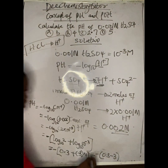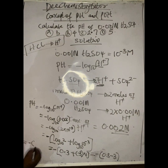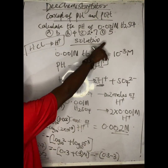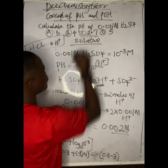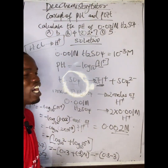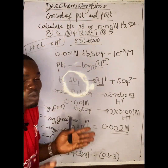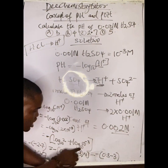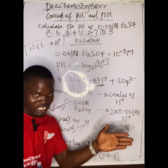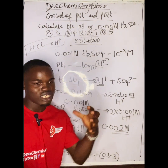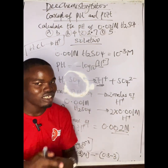So the pH of 0.001 mol/L H₂SO₄ is 2.7. To understand log values for numbers between 1 and 10: since log₁₀(10) = 1 and log₁₀(1) = 0, all log values for numbers between 1 and 10 fall between 0 and 1. That is why log 2 = 0.3 is a value between 0 and 1.